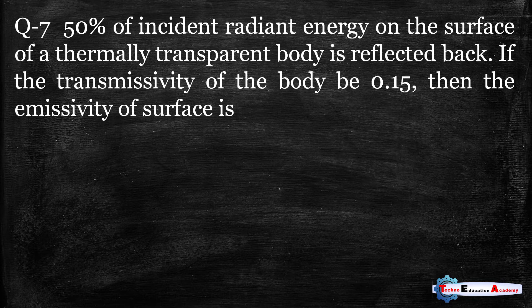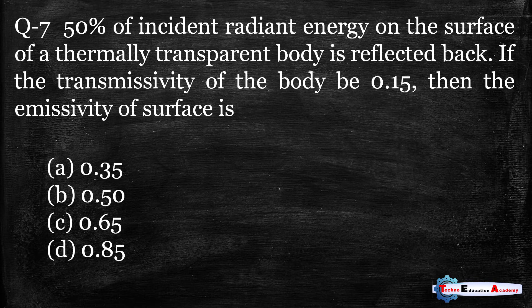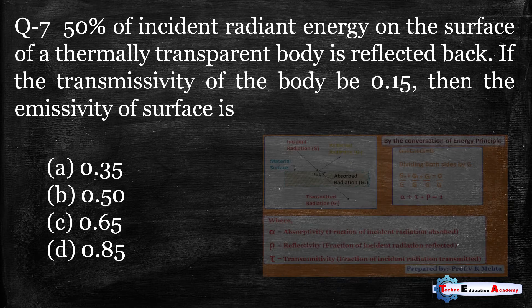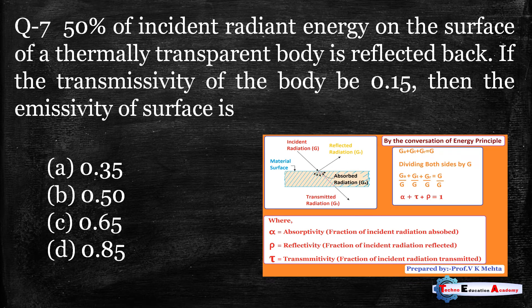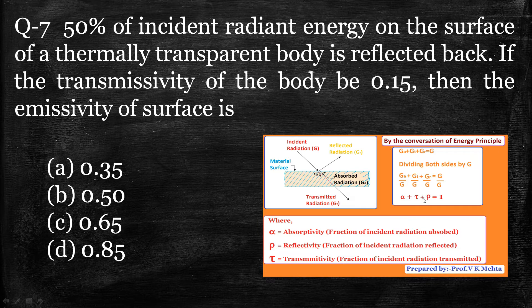Question number seven: 50% of incident radiant energy on the surface of a thermally transparent body is reflected back. If the transmissivity of the body is 0.15, the absorptivity of the surface is: option A: 0.35, option B: 0.5, option C: 0.65, option D: 0.85. Using alpha plus tau plus rho equals one — reflectivity rho equals 0.5, transmissivity tau equals 0.15, so alpha equals one minus 0.5 minus 0.15, giving the correct answer of 0.35, option A.